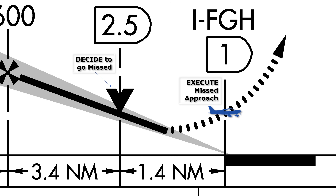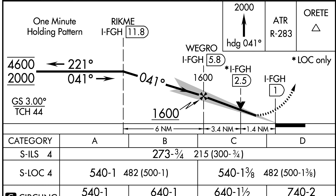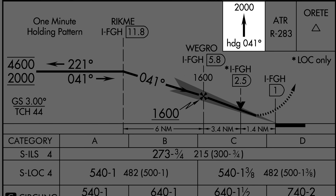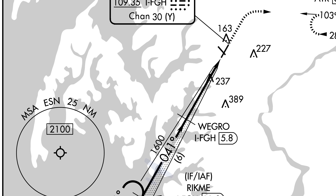Not all FAA approach plates have this ambiguity about where the missed approach point is on the profile view — why is this one special? Have a look at the missed approach procedure for a clue. The first step is a climb straight out on a 041 heading up to 2,000 feet — so we'll be flying runway heading initially. Looking at the plan view from the top down, as we're coming in on the approach we're following the localizer, which protects us from obstructions. And as we fly the missed, we're flying the same course on the way back up, so we're still protected. So as long as the approach doesn't have a maximum altitude — which is rare and we don't see one here — we can start the climb prior to the missed approach point and stay on course and still be assured protection.